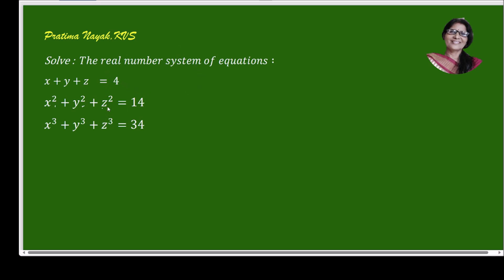There are three equations. We could solve by substituting values one by one, but instead I am going to do it by taking a polynomial in terms of t with roots x, y, and z.